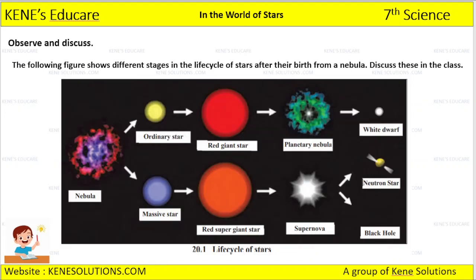You can see here the different types: ordinary star, red giant star, planetary nebula, white dwarf, neutron star, black hole, supernova, red supergiant star, massive star — and this is the nebula. These are all the different stages in a star's life cycle.